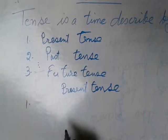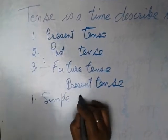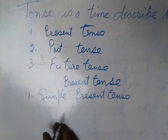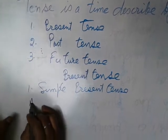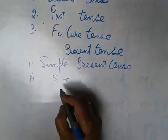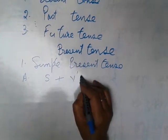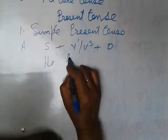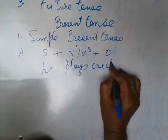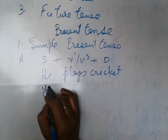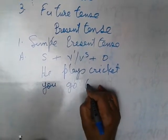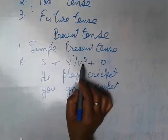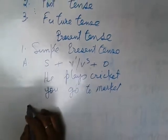First part of present is simple present tense. The structure of simple present tense - that is, the first structure is S. S denotes subject. Subject plus V1 or V5 plus object. He plays cricket. You go to market. You know it very well that V5 is used for singular and V1 is used for plural, second and third number.